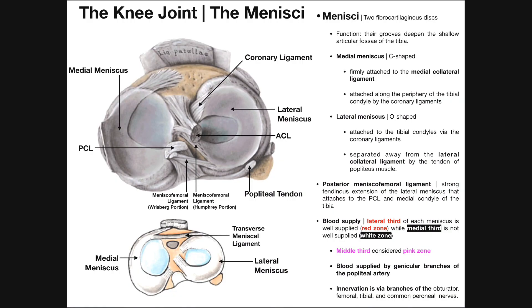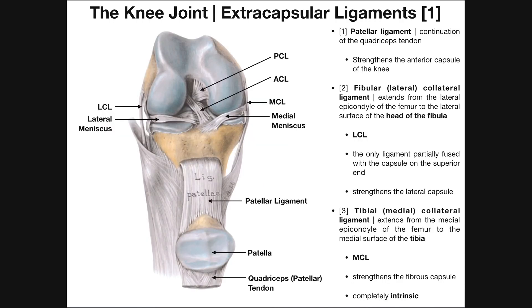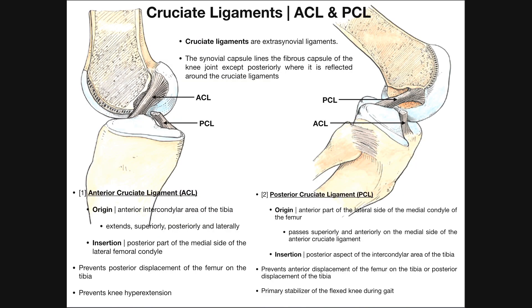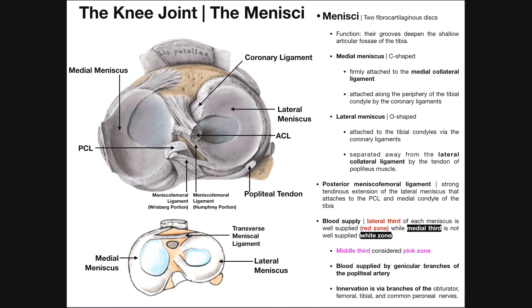Welcome back to Anatomy and Physiology on Catalyst University. My name is Kevin Tokow. In the previous videos, we talked about some of the extracapsular ligaments, such as the MCL and the LCL. We then moved in and talked about the intracapsular ligaments, ACL and PCL. Now we're going to talk about another important topic: the menisci of the knee.